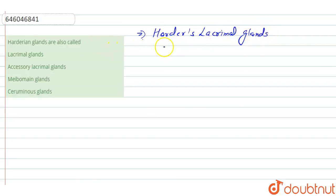These are the glands that are found in the eye orbit that occurs only in the tetrapods.